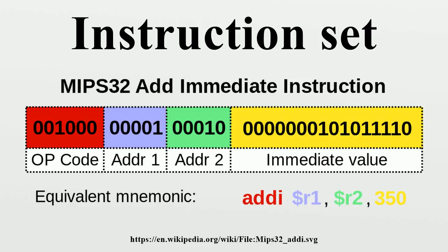Perform bitwise operations, such as taking the conjunction and disjunction of corresponding bits in a pair of registers, or taking the negation of each bit in a register. Compare two values in registers. Control flow operations include: branch to another location in the program and execute instructions there, conditionally branch to another location if a certain condition holds, indirectly branch to another location, or call another block of code while saving the location of the next instruction as a point to return to.